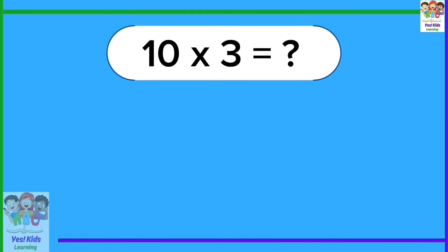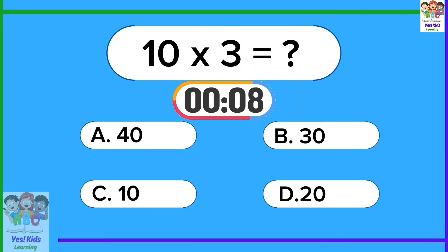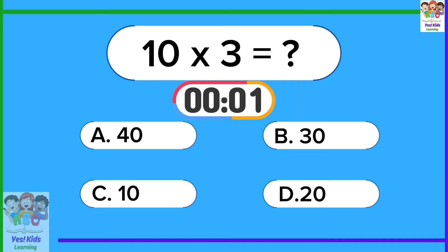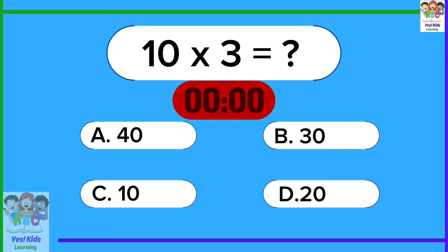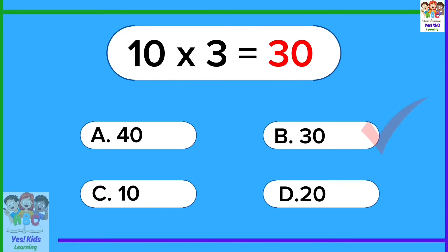10 times 3 equals? 30. 10 times 3 is 30.